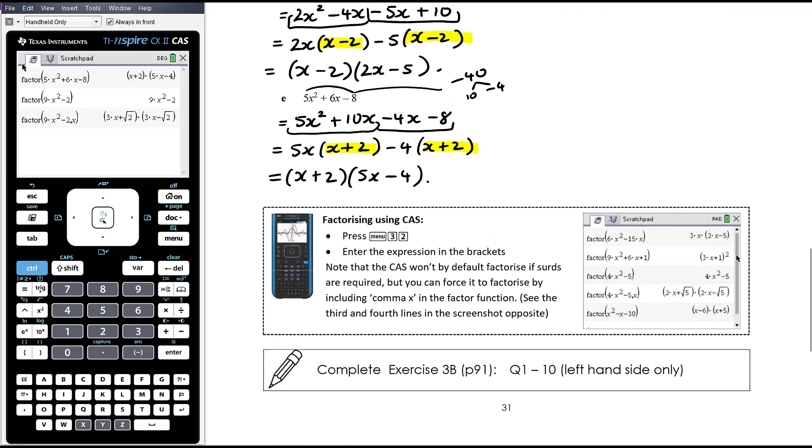So a bit of factorisation practice exercise 3b. Just run down questions 1 to left hand side of questions 1 to 10. If you need more practice of any kind of questions, perhaps do another column worth of questions. Yeah again it's about just not just knowing how to do factorisation, but really giving yourself the practice to make sure that you are really efficient at it.